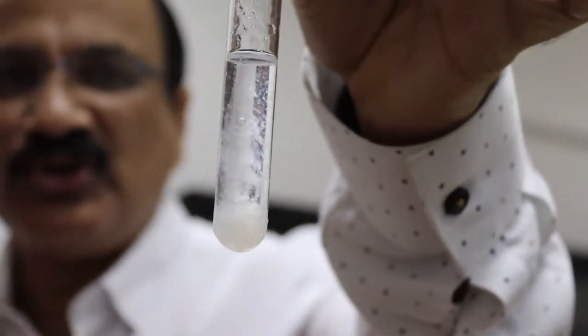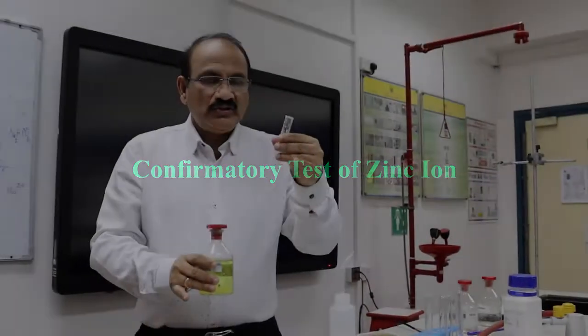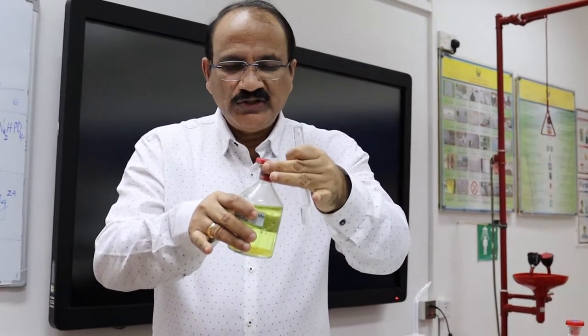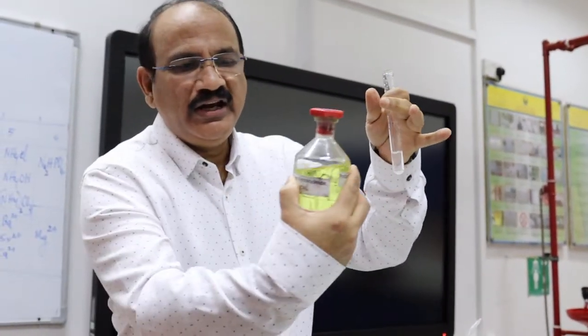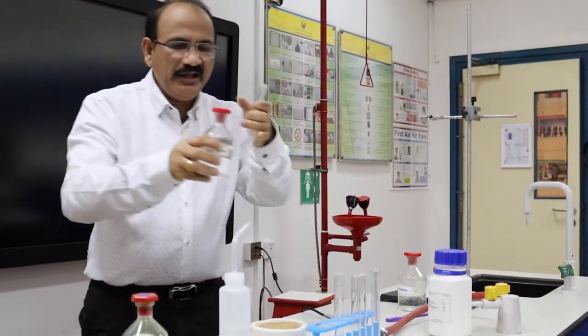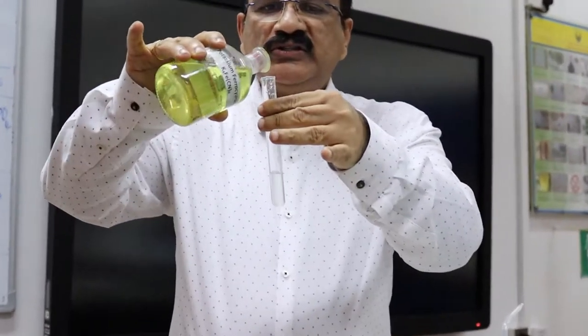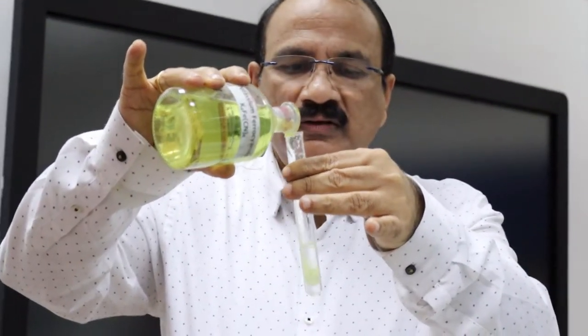This white precipitate shows the presence of Zn2+. For the confirmatory test, we need the salt solution and potassium ferrocyanide. We make it into an acid medium by adding dilute HCl, followed by potassium ferrocyanide. When we add potassium ferrocyanide, we get a precipitate — this is the confirmatory test for Zn2+.